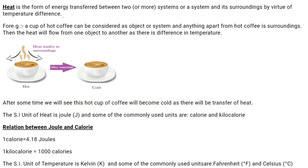Heat is an energy — a form of energy which is transferred between two systems. A system and all other things are the surroundings. Heat is transferred because there is a temperature difference. If one system is at 30 degrees and the surrounding is at 70 degrees, the heat will flow from 70 to 30 to reach equilibrium at 50 degrees.